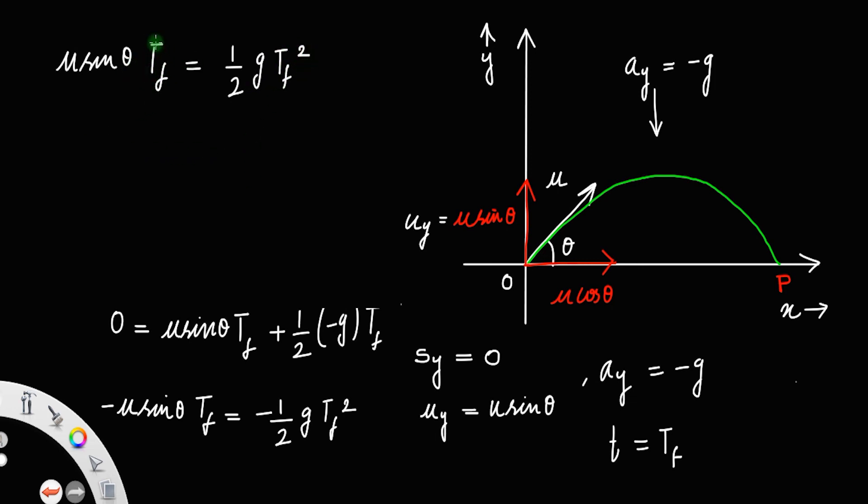The equation will be t_f equals—you can move this 2 to the left—so this will be 2u sin theta divided by g. This is the expression of time of flight: t_f equals 2u sin theta by g.